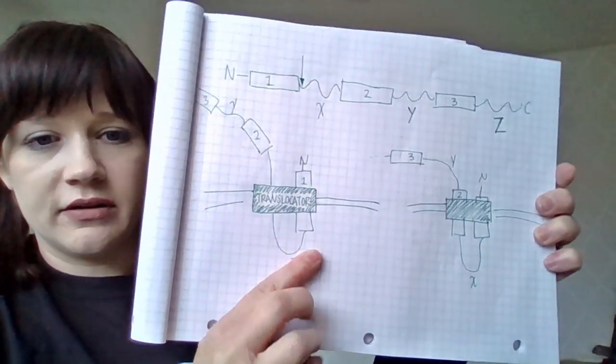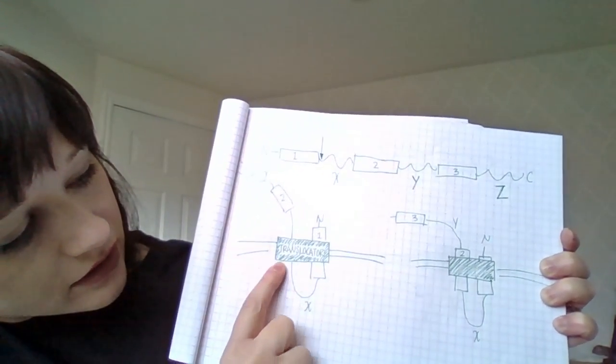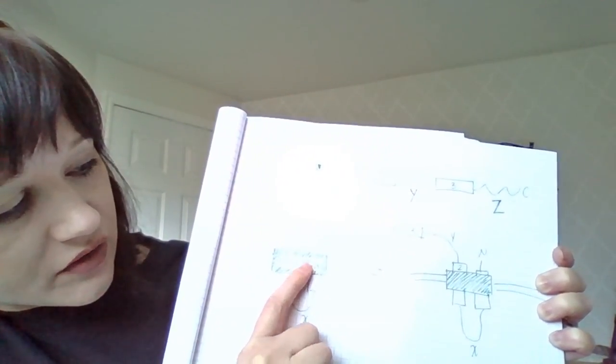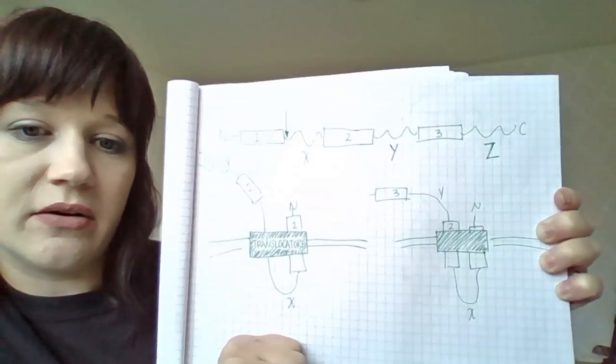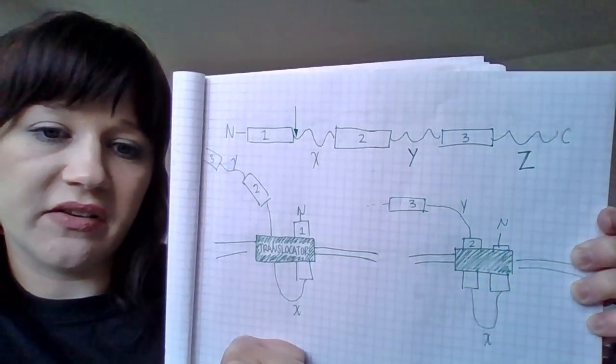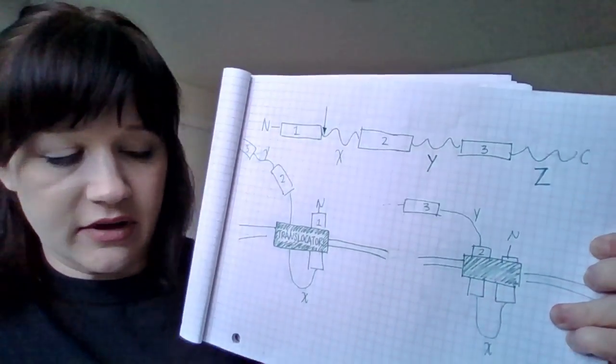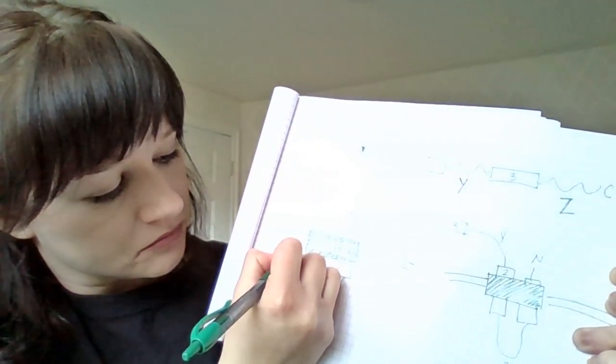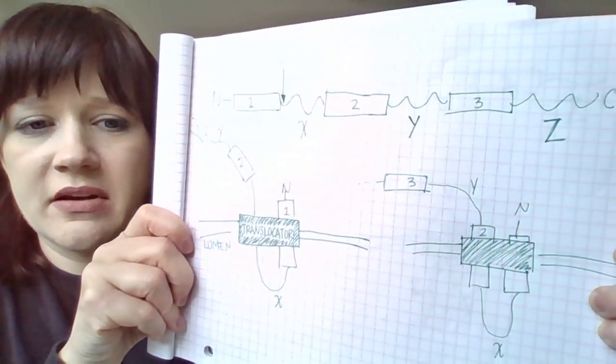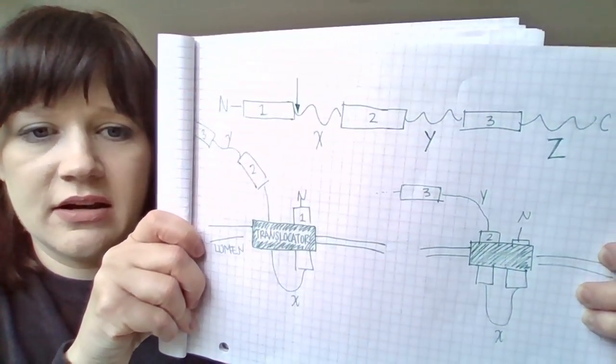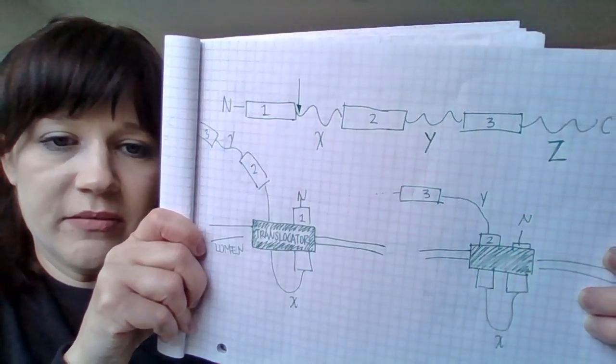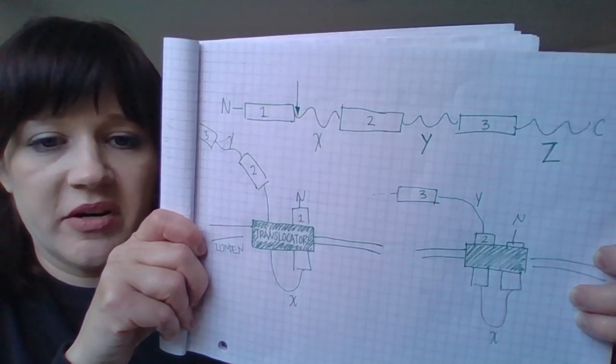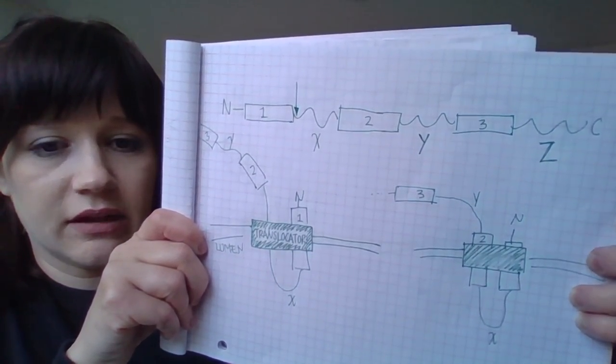So here we have our translocator, and we have the region one getting inserted. And it's getting inserted with the N terminus facing out. So this is the lumen of the ER, and we have the N terminus facing out into the cytosol.